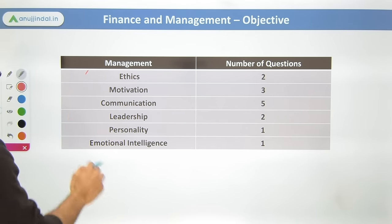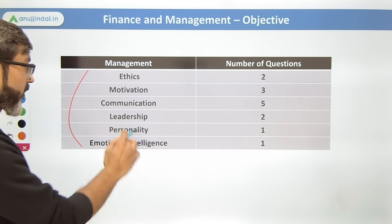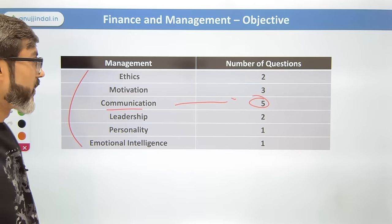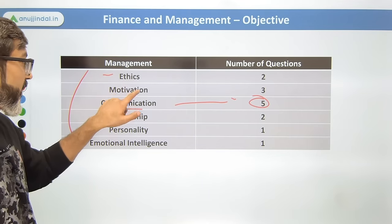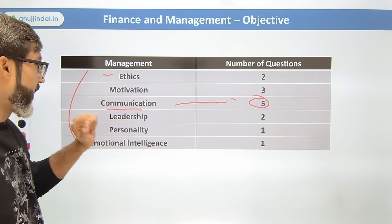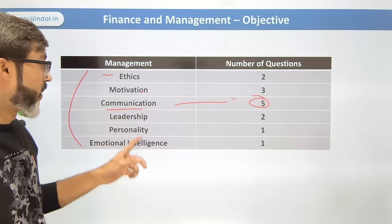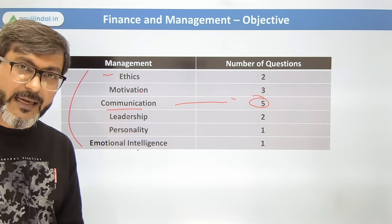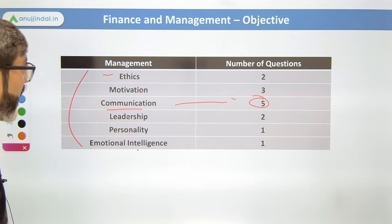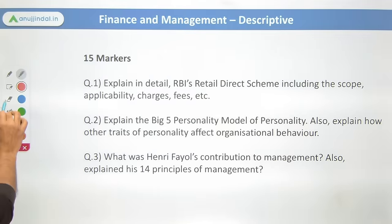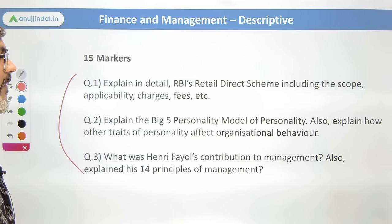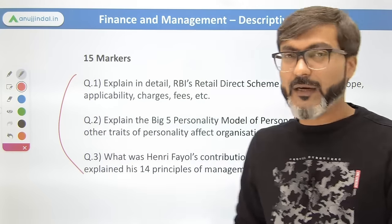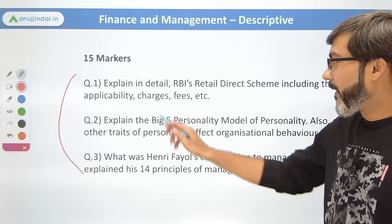In Management for 2023, the number of topics reduced slightly. Communication had five questions directly, ethics had two questions, motivation three questions, leadership two questions, personality appeared, and emotional intelligence had eight marks. These core topics — communication, motivation, ethics, leadership — remain consistently important.